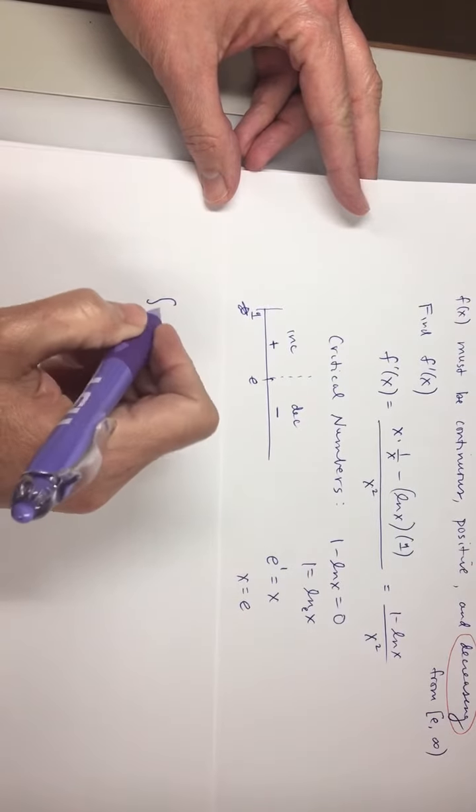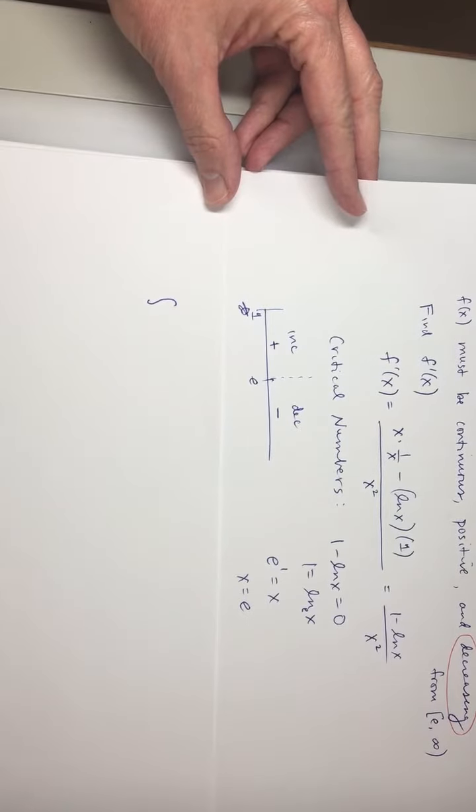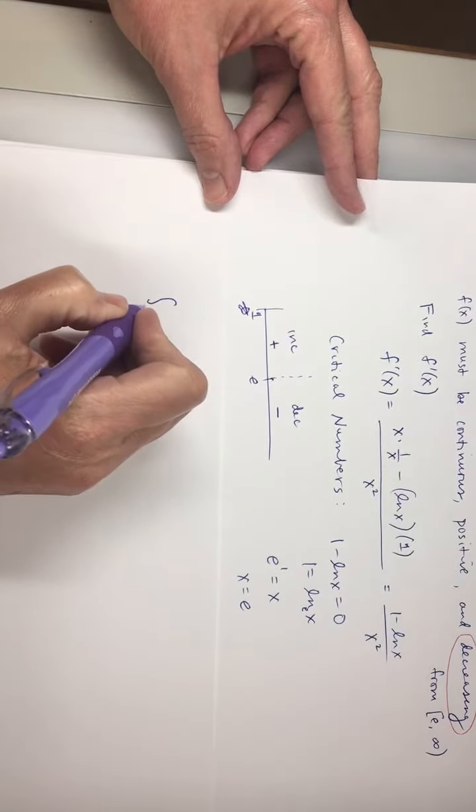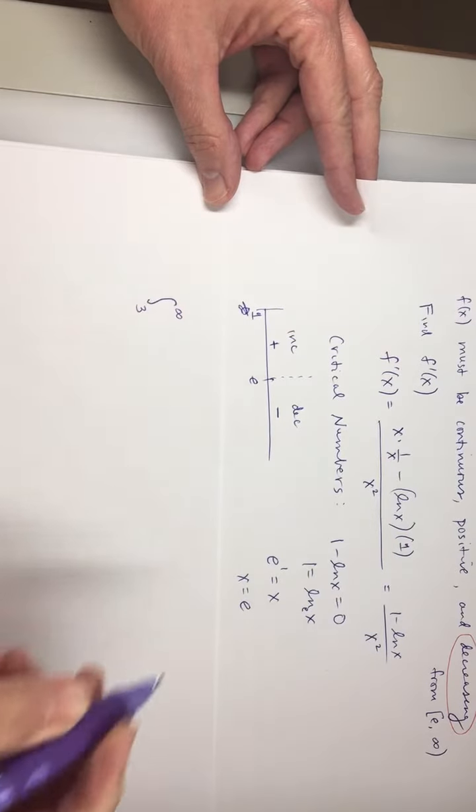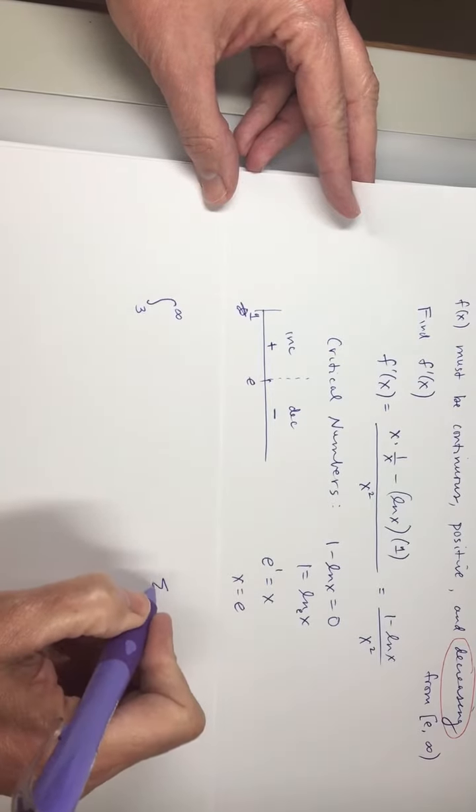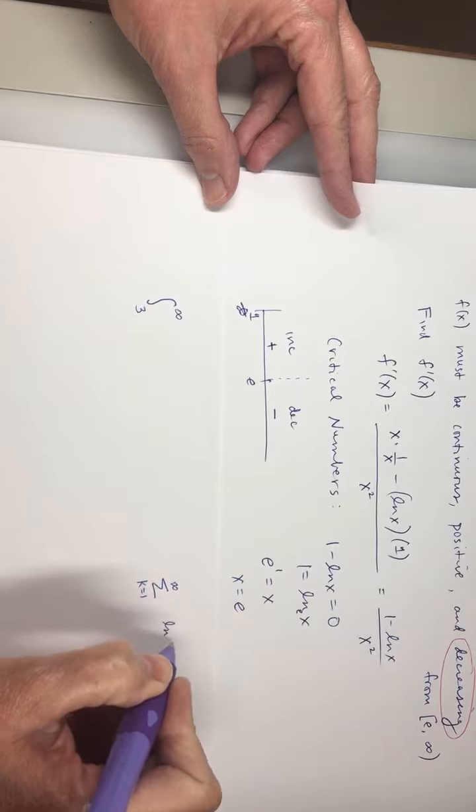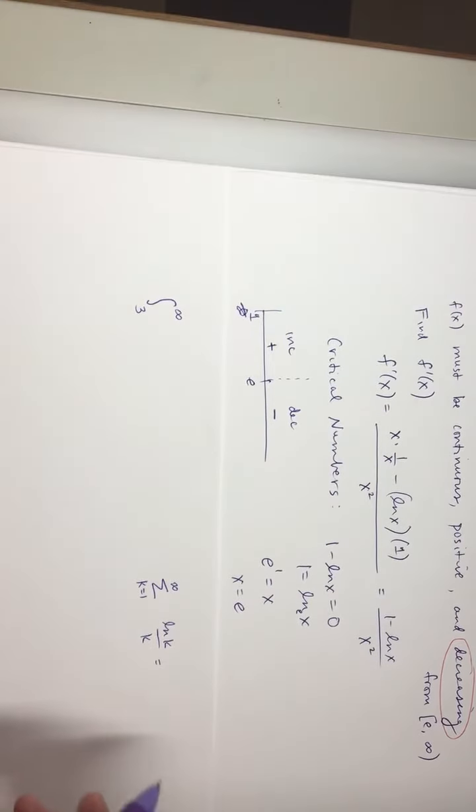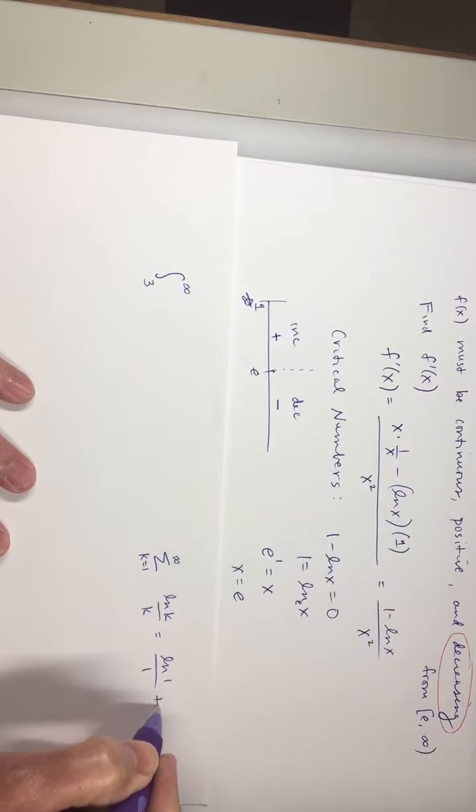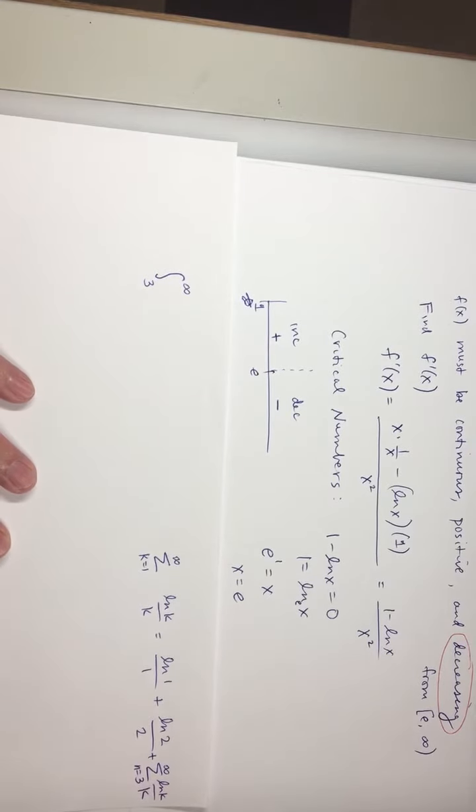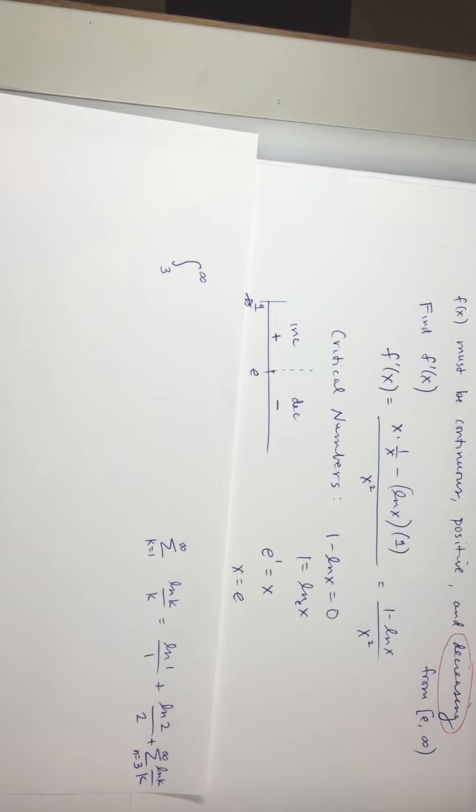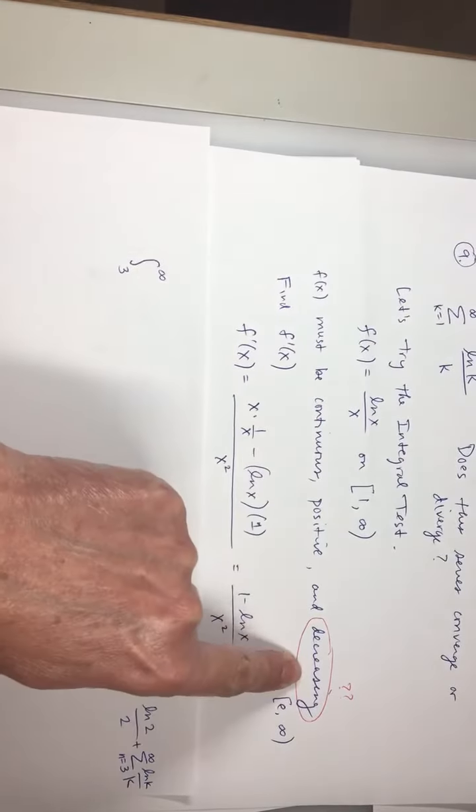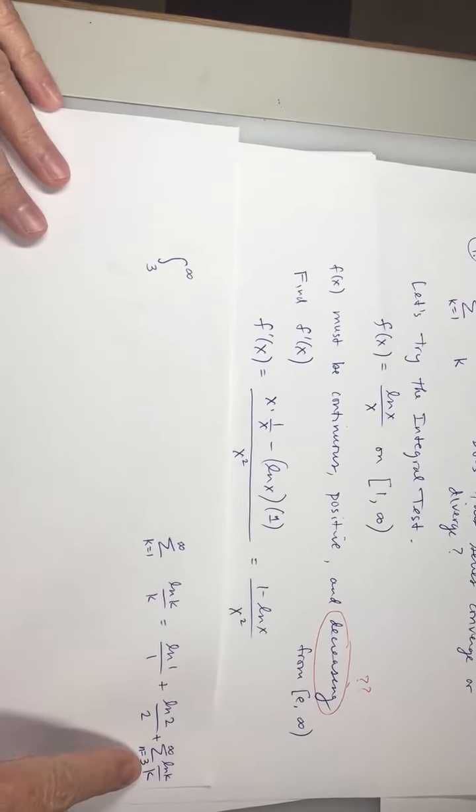I want to do the integral. We could do the integral from 3 to infinity. 1 to infinity would be fine. But to play it safe, I'll go 3 to infinity. Because now I'm looking at this series. K goes from 1 to infinity. ln(k) over k. If I plug in 1, that's ln(1) over 1. If I plug in 2, that's ln(2) over 2. And then I'll consider the rest. The two terms at the beginning are not going to affect the convergence or divergence of this problem.